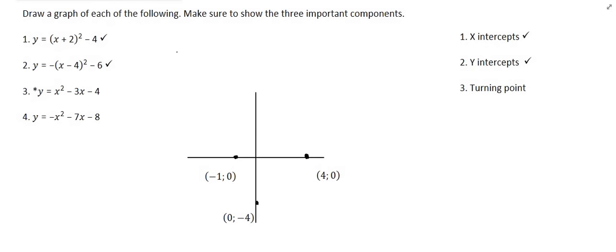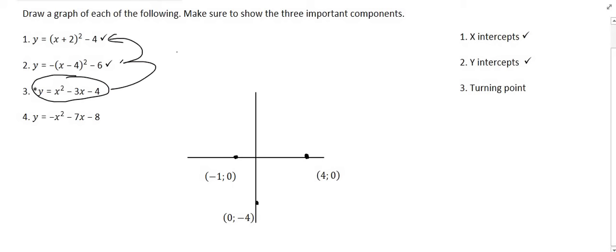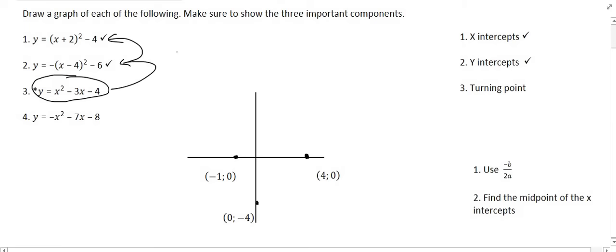The last thing we need is the turning point, but we can't use the turning point form since the equation isn't given that way. You could modify the equation using completing the square, but that's not ideal. The better options are to use minus b over 2a, or to find the midpoint of the x-intercepts. I'd suggest using minus b over 2a. You don't have to remember this off by heart — it's always hiding within the quadratic formula. Just as you identify a, b, and c from the original equation for the quadratic formula, use minus b over 2a.